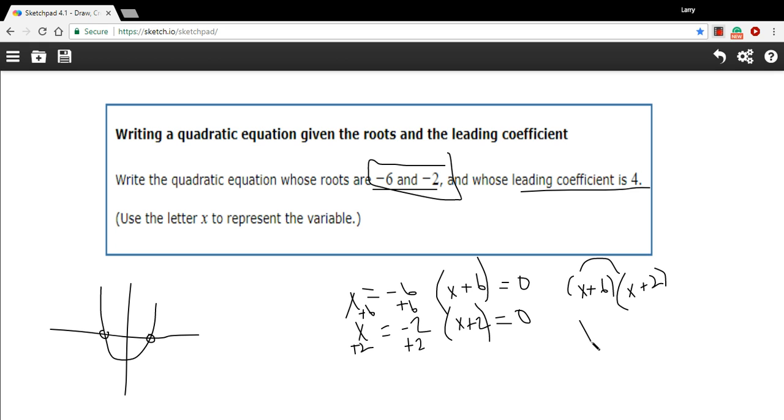x times x is x squared. x times two is two x. Six times x is six x. And two times six is 12. Then we'll combine our like terms. We get x squared plus, oops, that should have been a six x, x squared plus eight x plus 12.